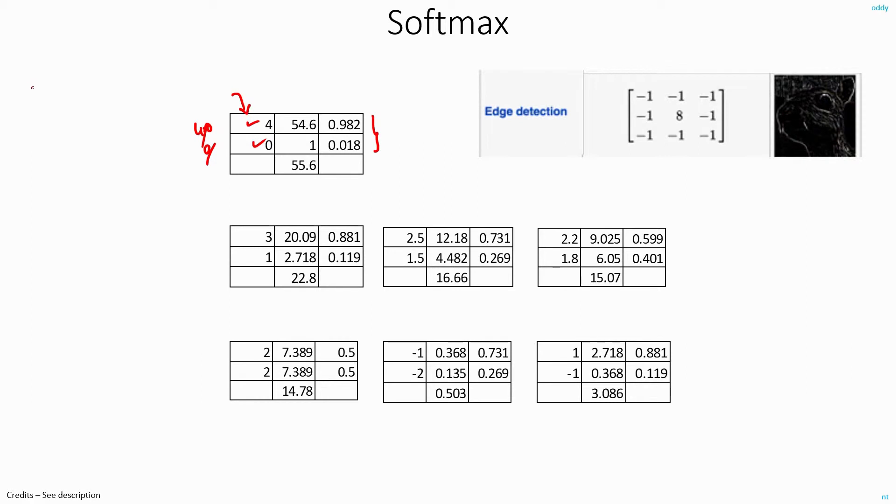Now, you have to observe few things about this softmax. The first thing is that, irrespective of whatever be your input values, your output will always be between 0 and 1. The same thing can be observed in all the cases. And the second thing is, sum of all the outputs will always equal 1 in all the cases. That's the second observation.